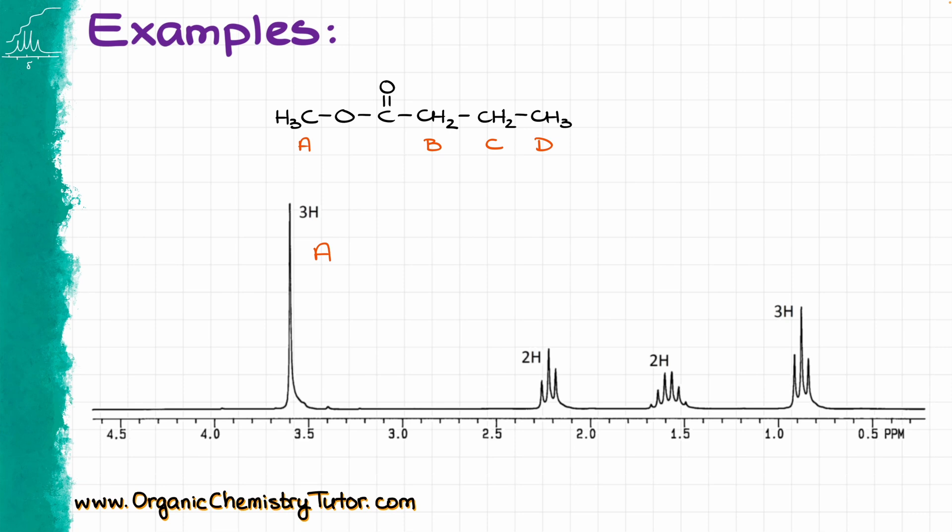Here, we see that the group A has no neighboring hydrogens on the adjacent atom, thus it's going to be a singlet. So my group A over here, the neighboring atom is oxygen. Oxygen doesn't have any hydrogens, therefore zero neighbors. Doing similar analysis for our group B, we can see that B has two neighbors, so that is going to be a triplet.